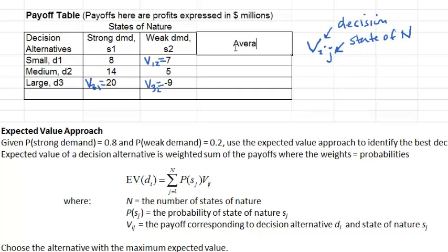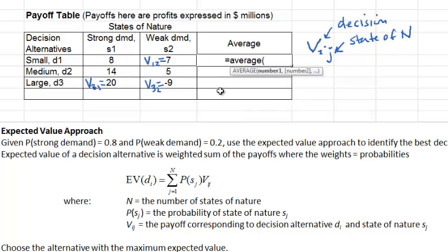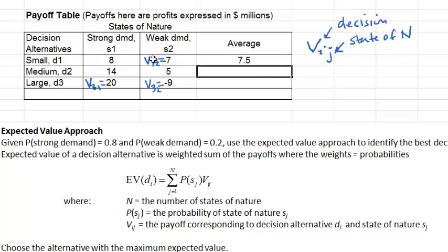Here I am going to get the average for each alternative. The average of 8 and 7 is 7.5 — I could use the average function to get that value, 7.5 — and then copy it down to the other two cells to get the average for everyone. The average payoff is highest at the medium size, so we might choose to build a medium condominium complex.